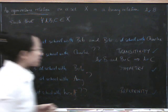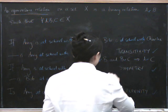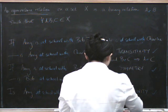So that's what transitivity says. Symmetry says if A is related to B, then B is related to A.